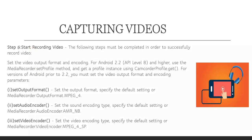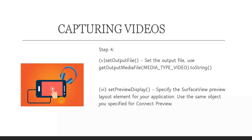Continuing step four: set the video output format. We have set the camera, audio source, and video source as inputs — now we also have to define the output. We get the profile instance using CamcorderProfile.get(). We have to set the output format, for example MPEG-4. Different types of audio encoders are present, so whichever audio encoder you are interested in, you have to set that particular audio encoder. We also have to set the video encoder. So in step four we are setting the output format, audio encoder, and video encoder.